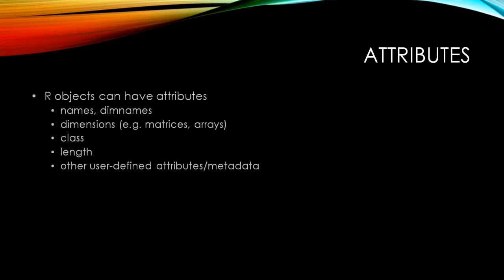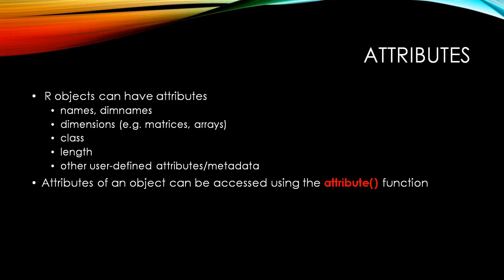Then we have something very important called attributes. R objects can have multiple attributes or characteristics. They can have names or dim names, which means dimension names. Similarly, it can have dimensions, that is matrices or arrays. Matrices will have a row and column, and arrays will have multiple rows and columns. Then you have class, then you have length. Length is number of elements in the vector, and then other user defined attributes. You can use any of the features and create your own attributes. Attributes of an object can be accessed through the attribute function.